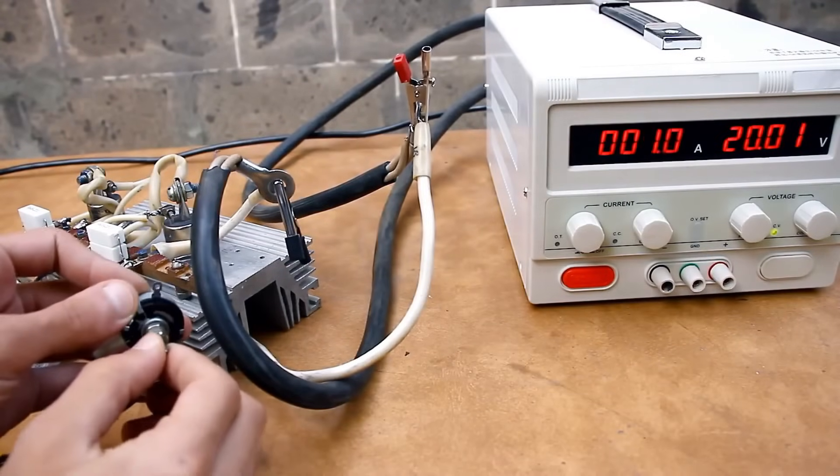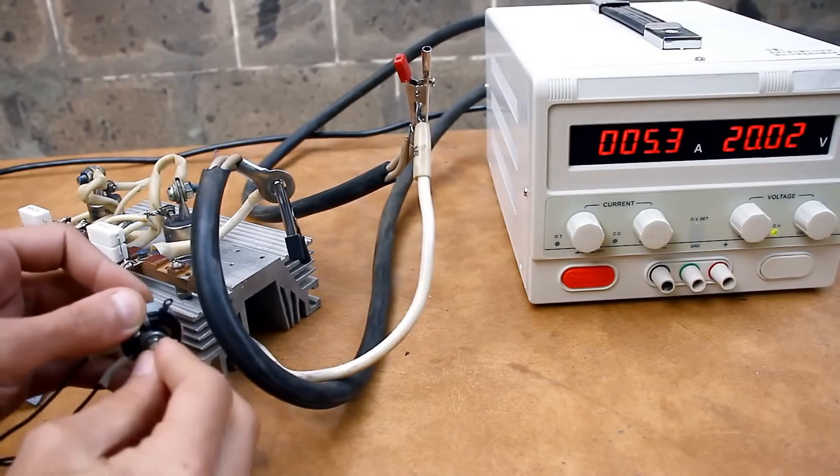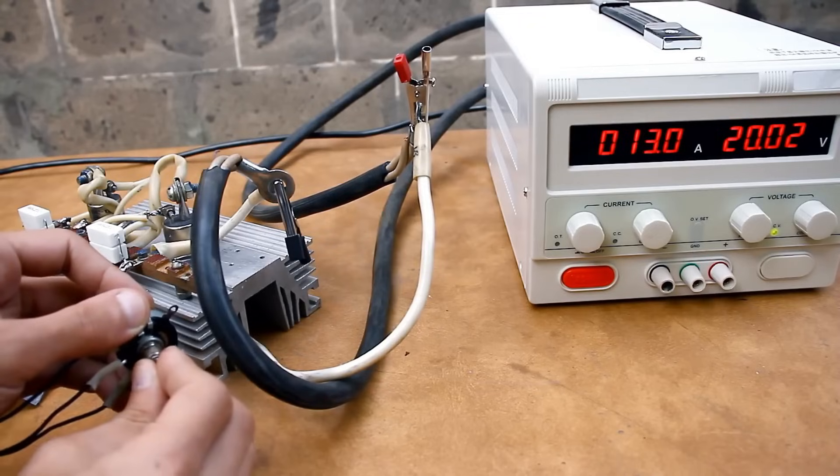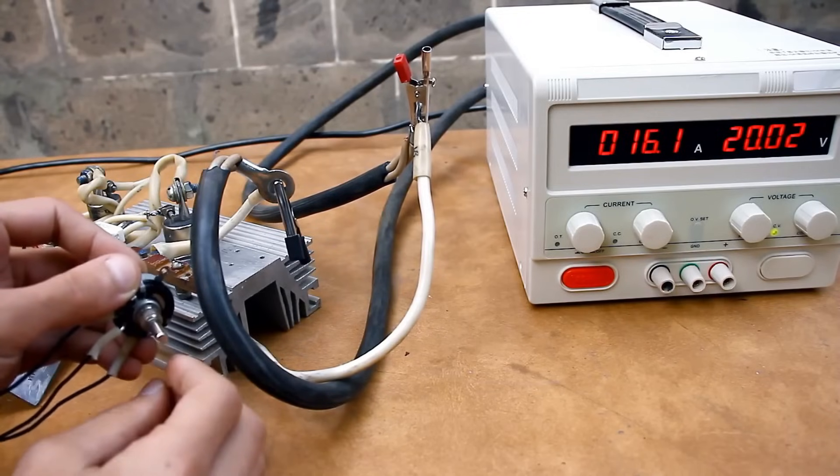Let's not be stingy and by rotating the variable resistor of the load, we'll set the current to 20A. I left the load on, note, without a fan, for a minute.